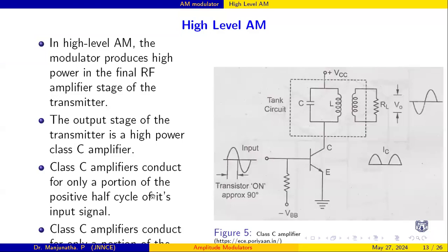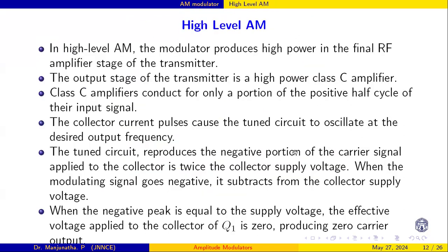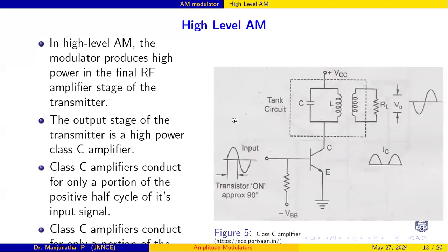In this video I'm going to demonstrate the working of a high-level amplitude modulator. In high-level AM, the modulator produces high power in the final amplifier stage of the transmitter. These are the basic stages: a basic modulator diagram, followed by a series of amplifiers, and then the final RF power amplifier whose output is fed to the antenna. This RF stage uses a Class C amplifier.